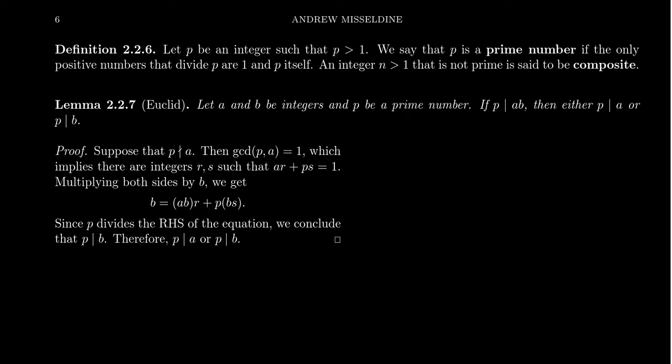Since the numbers are coprime, by the Euclidean algorithm there are numbers R and S such that AR plus PS equals one. Let's multiply both sides of the equation by B. B times one equals B. AR times B is ABR and PS times B is PBS.